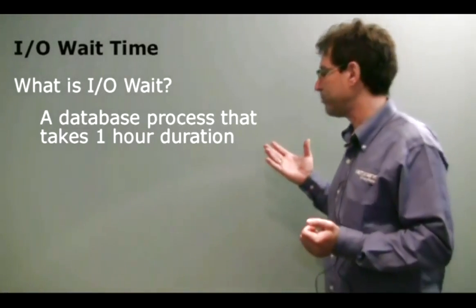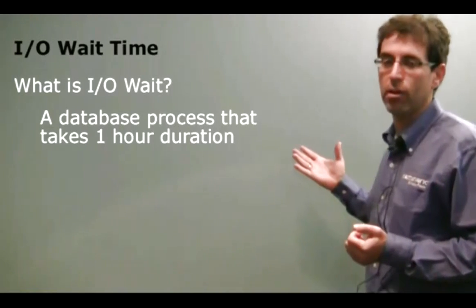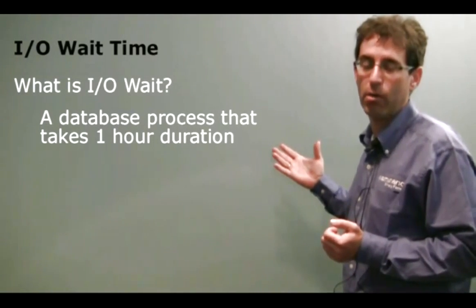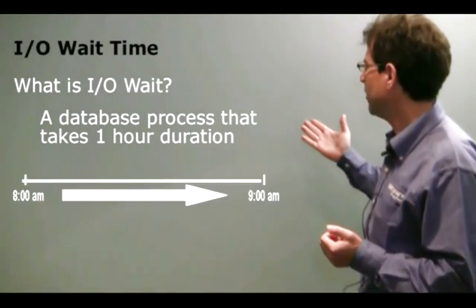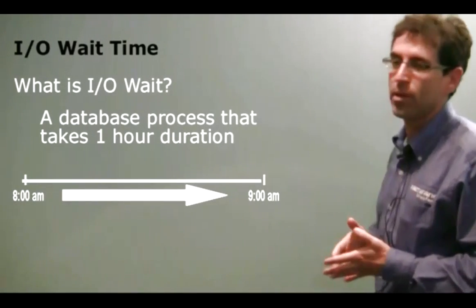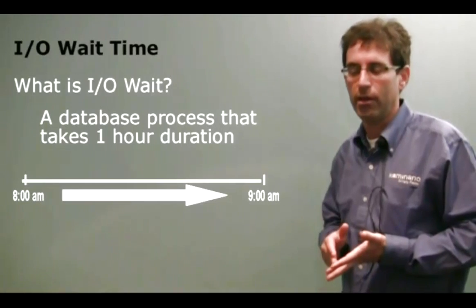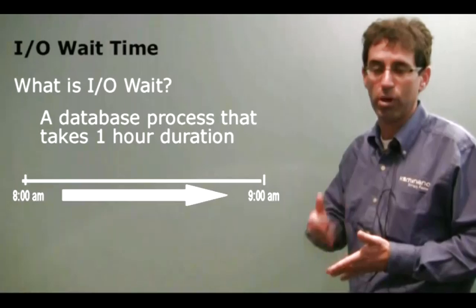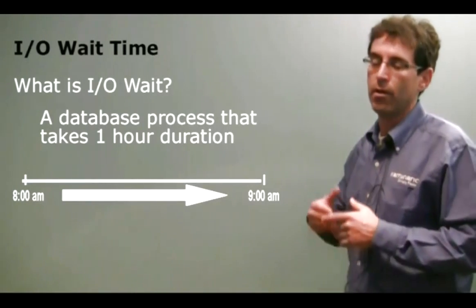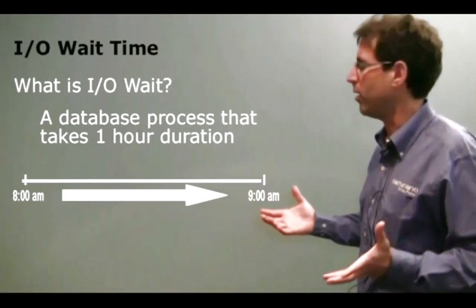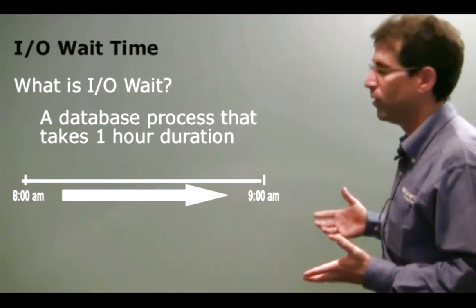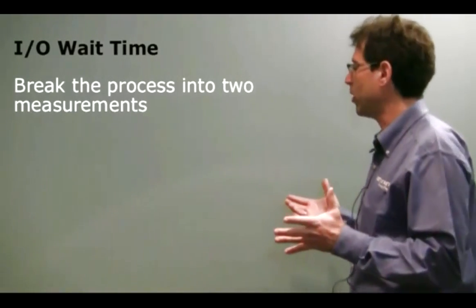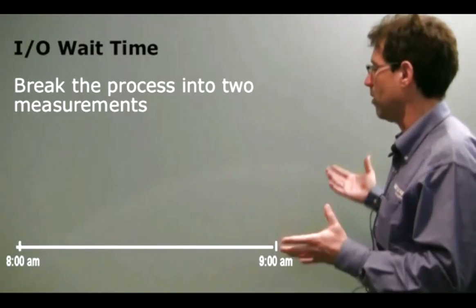Let's think of a process — a job — that takes one hour in duration. Here's something that started at eight and completed at nine, and that can be a job, a task, or end-user activity. It took one hour to complete.